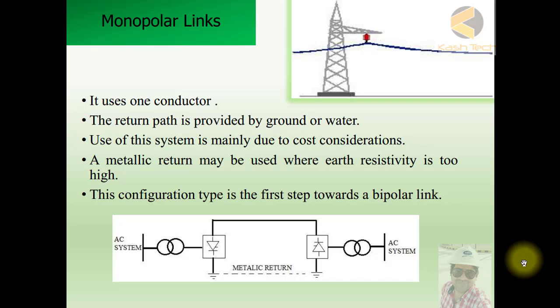Hi guys, now we will start our first component of DC system that is called as a monopolar link. Monopolar means mono means one, so single pole. It's using a single conductor for transmission of the DC power.